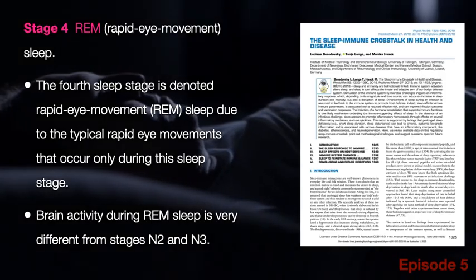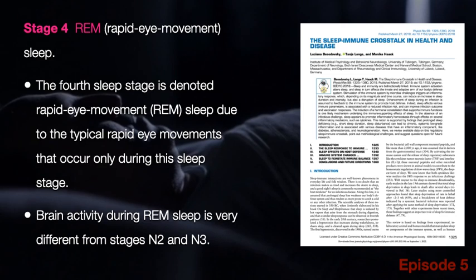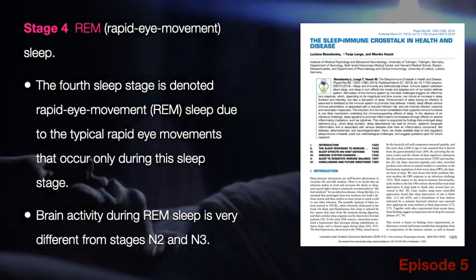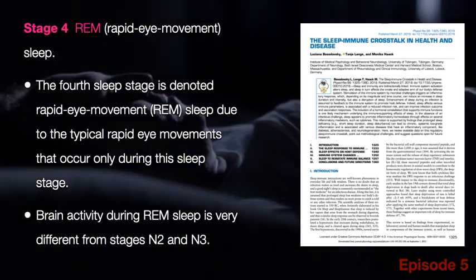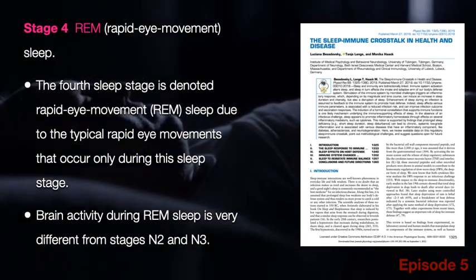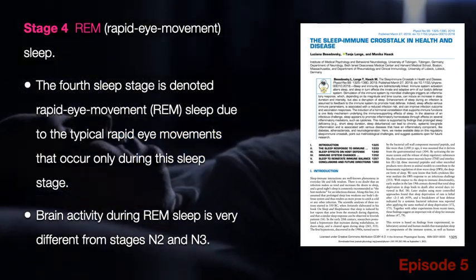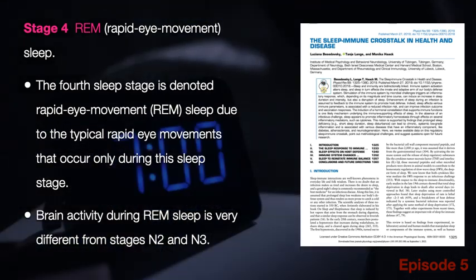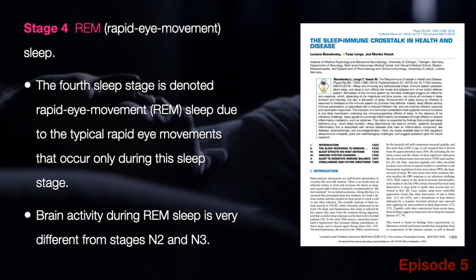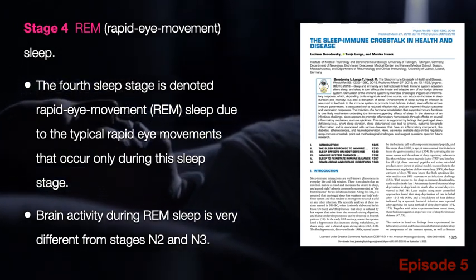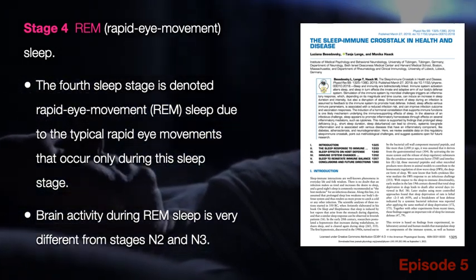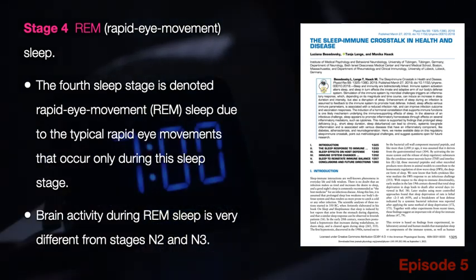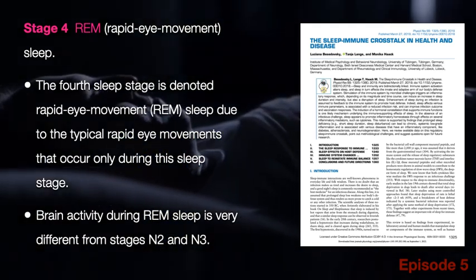Stage 4 of sleep — this is REM, Rapid Eye Movement Sleep. The 4th sleep stage is denoted Rapid Eye Movement Sleep due to the typical rapid eye movements that occur during the sleep. Brain activity during REM sleep is very different from stages N2 and N3.